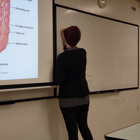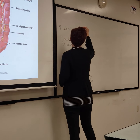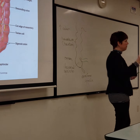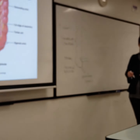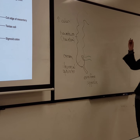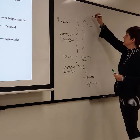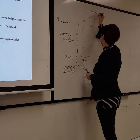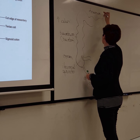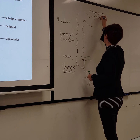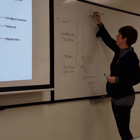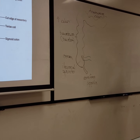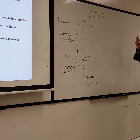This is the ascending colon. The bend here is called a flexure; because it's on the right side where the liver is, it's the hepatic flexure. The colon hangs down for the transverse colon, and the mesocolon is the mesentery that suspends it from the posterior abdominal wall. So the transverse colon is intra and the ascending colon is retro.